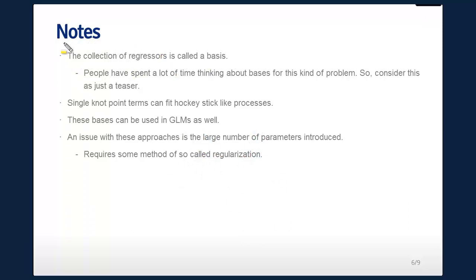Let's go through some notes. This collection of spline regressors is called a basis. To say that people have spent a lot of time thinking about bases for this kind of problem is an understatement. It underlies a huge chunk of statistics. It's a big part of nonparametric regression. If you just want one knot point, then you can fit kind of like hockey stick type problems. And that's sometimes useful if you have data that looks like a hockey stick. You need to kind of know where that knot point is. It's hard to estimate the knot point. So, we don't cover that. At any rate, you can now fit kind of hockey stick looking things.